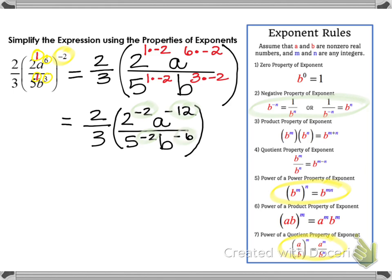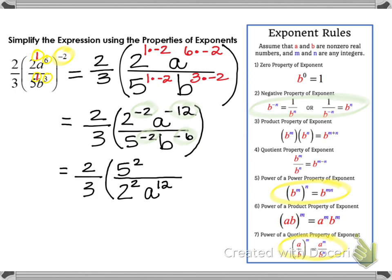Any coefficient or variable with a negative exponent — I'm going to take the reciprocal of that. If it's in the numerator, I'm going to put it in the denominator, and vice versa. So I keep the two-thirds out front; that doesn't change. Now I'm going to take the reciprocal of 2 to the negative second and a to the negative twelfth — those go to the denominator, and when they do, the power becomes positive. So in my denominator I now have 2 squared and a to the twelfth. In the numerator, I have 5 squared and b to the sixth.